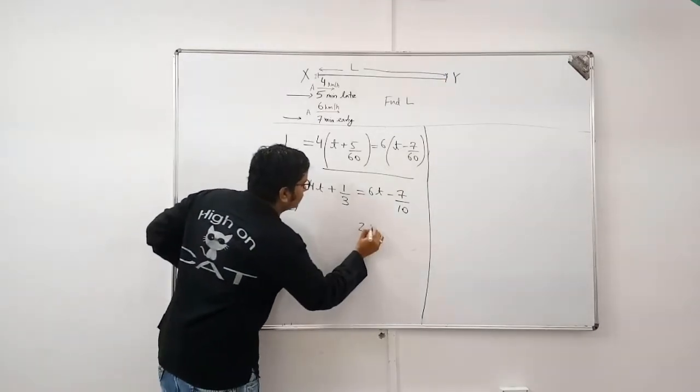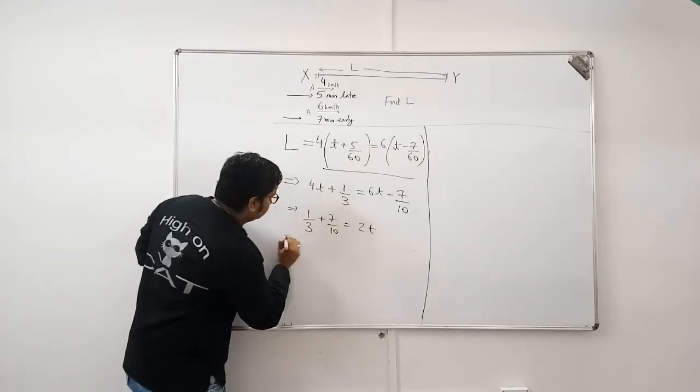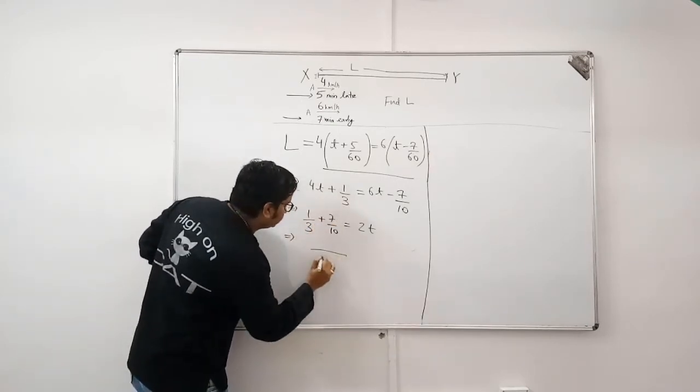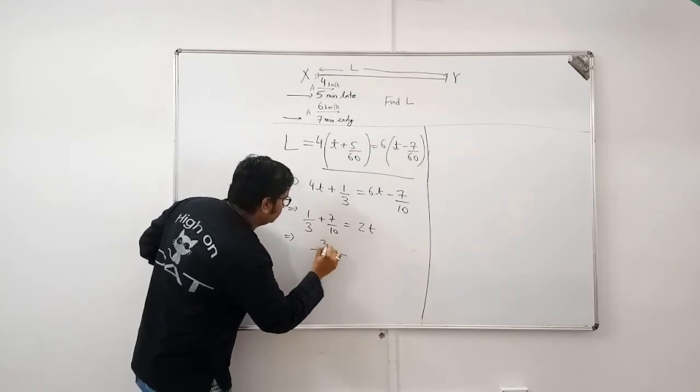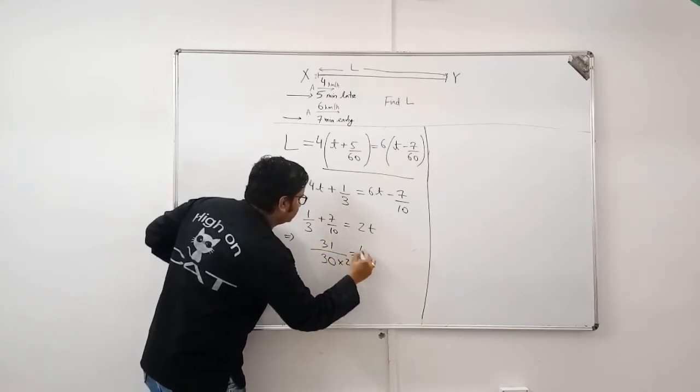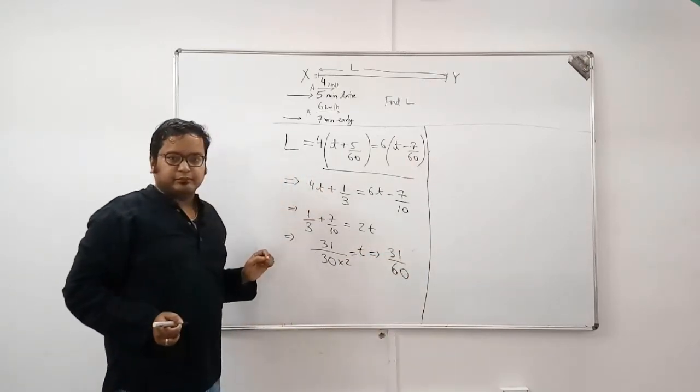So, what you get here is 2T is equal to 1 by 3 plus 7 by 10. So I am solving this now. You get the value of T. Now, put the value of T here to get the length.